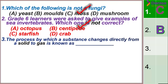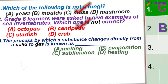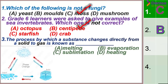Question 3: The process by which a substance changes directly from a solid to gas is known as — choices are melting, evaporation, sublimation, and heating. There is a helpful song: sublimation — solids to gases; deposition — gases to solids; condensation — gases to liquids.